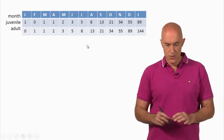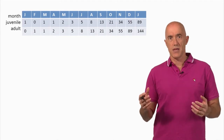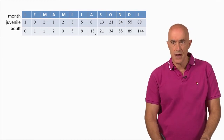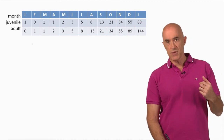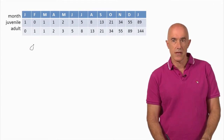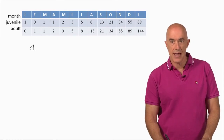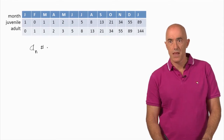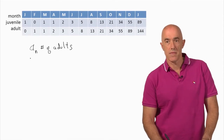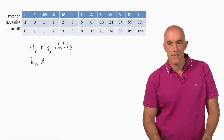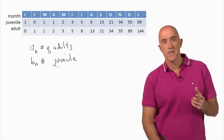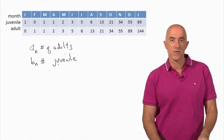Let's try to write down some equation for the coupling of the juvenile rabbits and the adult rabbits. We need to define separately the number of juvenile rabbit pairs and the number of adult rabbit pairs. We'll call A sub n the number of adult rabbit pairs, and B sub n the number of juvenile rabbit pairs. And we want to write a recursion relation for each.